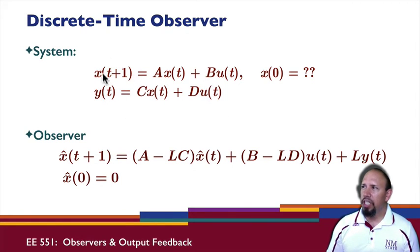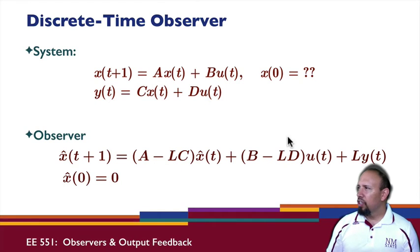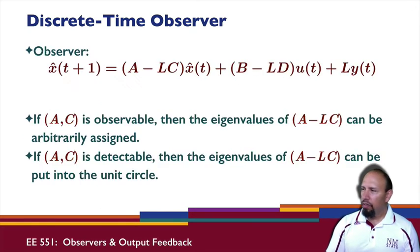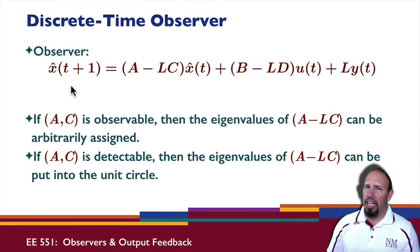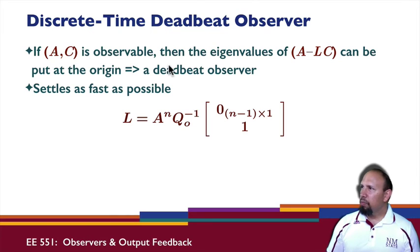Speaking of discrete time, we can do the same kind of thing with a discrete-time observer as we did with the continuous-time observer. In discrete time this is our system; we don't know the initial condition in general, so we choose this as our observer. This is basically the same structure as before with y minus y-hat embedded within the expression. Again, if (A, C) is observable then we can put the eigenvalues of (A - LC) wherever we want; if (A, C) is just detectable we can put eigenvalues of (A - LC) inside the unit circle. In discrete time, if (A, C) is observable, the eigenvalues of (A - LC) can all be placed at the origin.